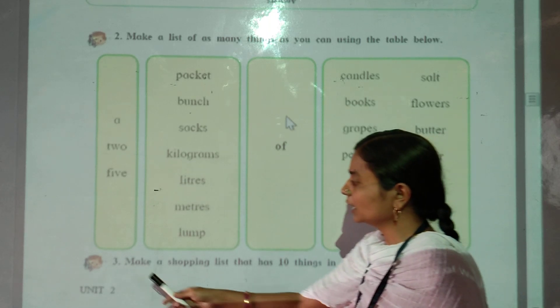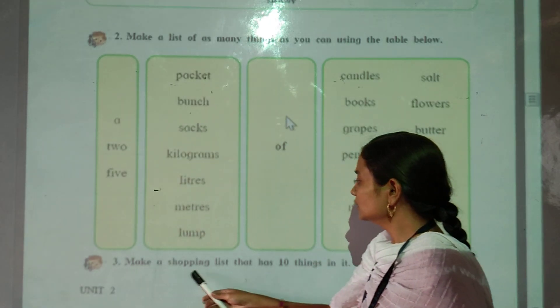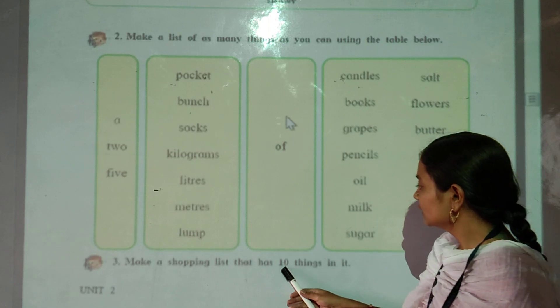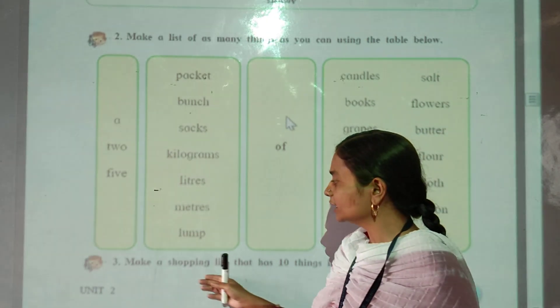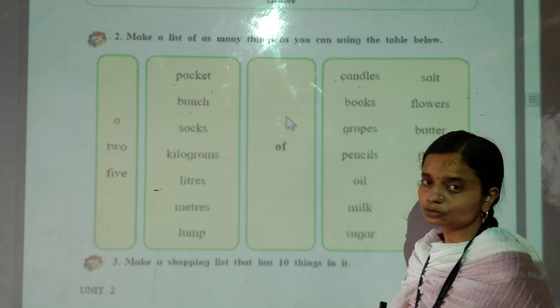Make a list that has 3 things in it. You can use the table below.